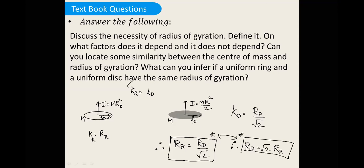That means the radii of gyration are equal and this relation is satisfied. You can take a screenshot and we will move to the next question.